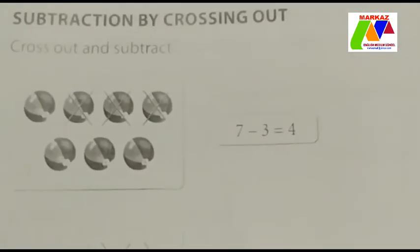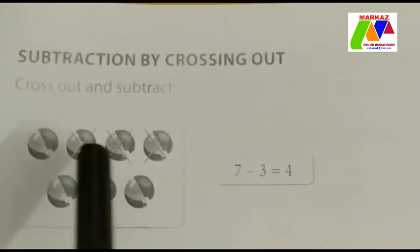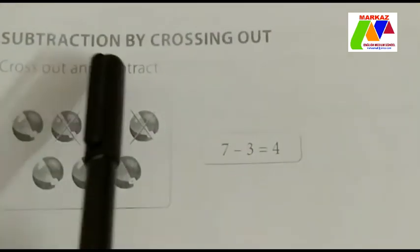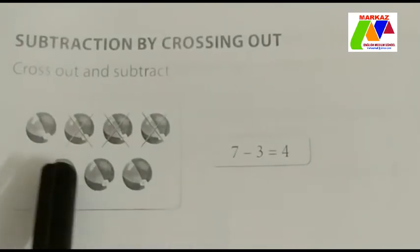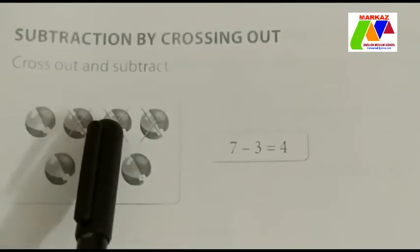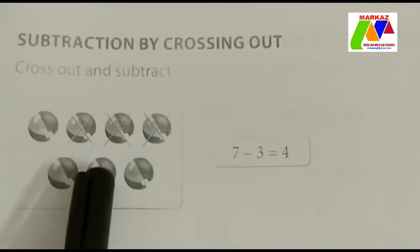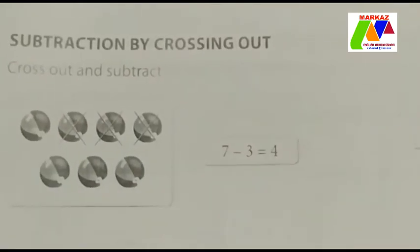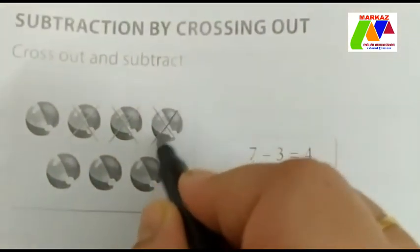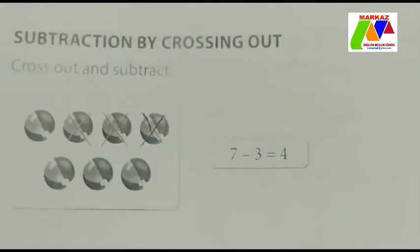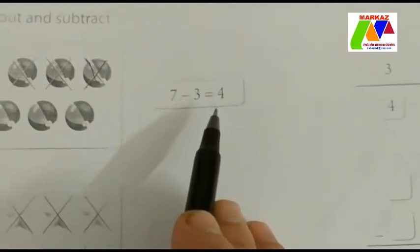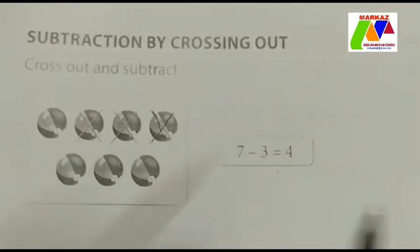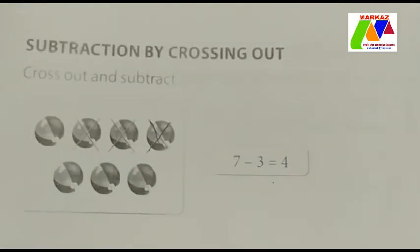Next, page number 80, subtraction by crossing out. Here we can see how many balls: 1, 2, 3, 4, 5, 6, 7. 7 balls. Cross out 3 balls. So 7 minus 3 is equal to 4. Clear?